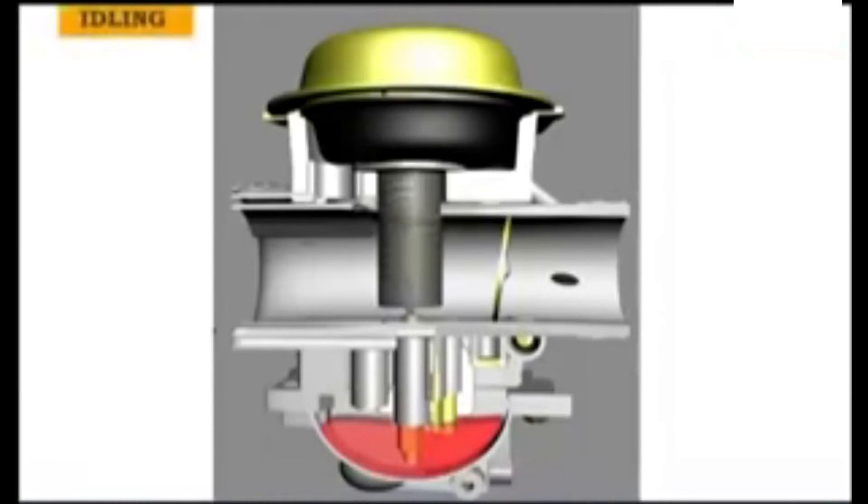This is what a carburetor looks like when the engine is idling. In this case, the butterfly valve and the slide are closed, and the mixture is only going through the pilot circuit to keep the engine running.